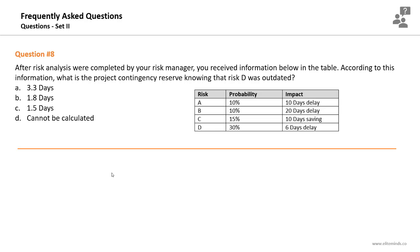Question number eight. After risk analysis was completed by your risk manager, you received information in a table. According to this information, what's the project contingency reserve knowing that risk D was outdated? To find the contingency reserve, calculate the expected monetary value (EMV) of each risk and sum all EMVs, giving a negative sign for opportunities and a positive sign for threats. We have three threats and one opportunity.